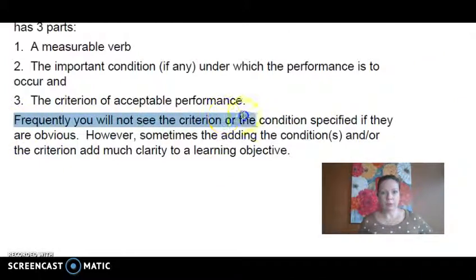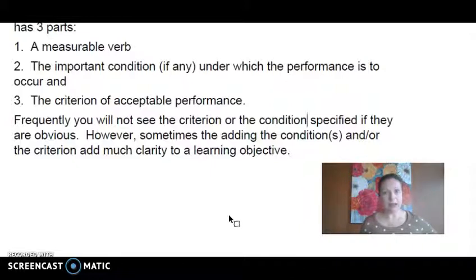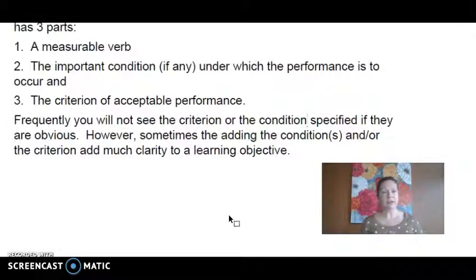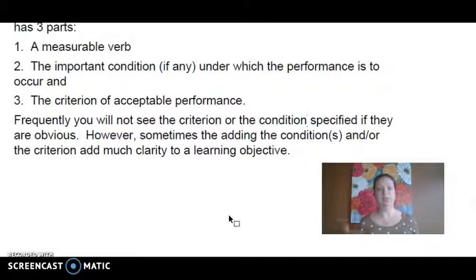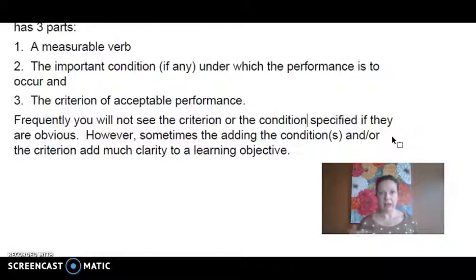Sometimes people say 80% — for example, the student must be able to reduce fractions 80% of the time. However, frequently you will not see the criterion and condition if they're obvious. If you want students to do it 100% of the time, that's obvious and you don't have to state it. But sometimes you don't need them to do it perfectly — they just need to show an understanding. This is especially true when introducing a standard for the first time. You may cycle back around and go deeper to reach the proficient level the second time. So the first time, you may just want them to do it 80% of the time; the second time, you want full mastery. The criterion and condition together form one way to write a measurable objective.